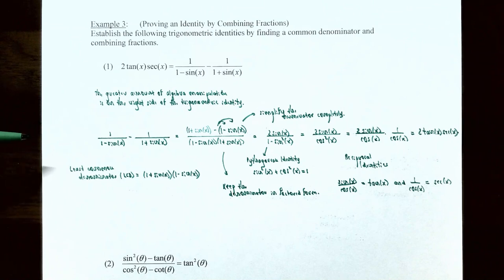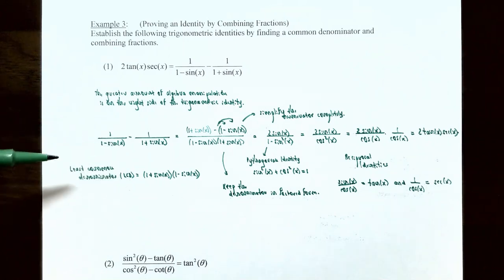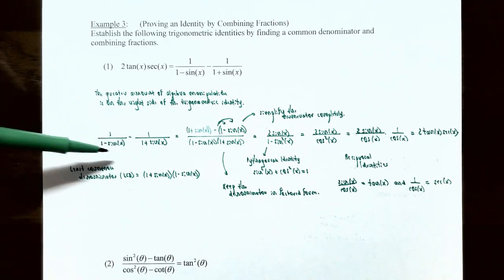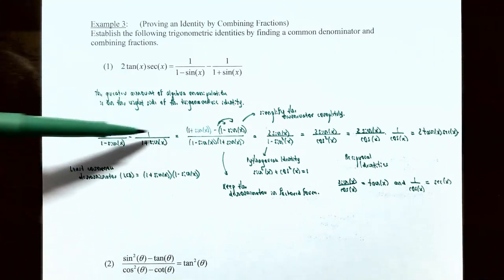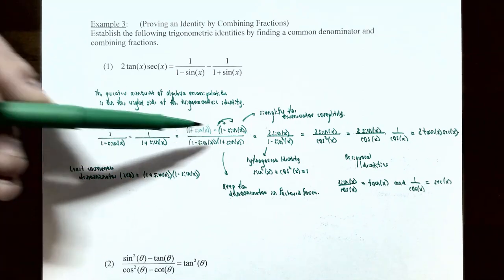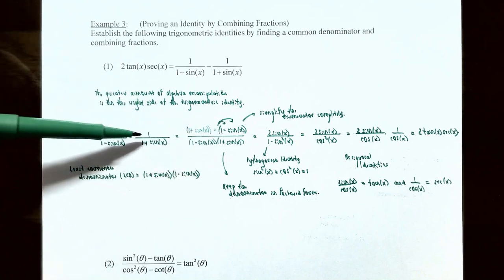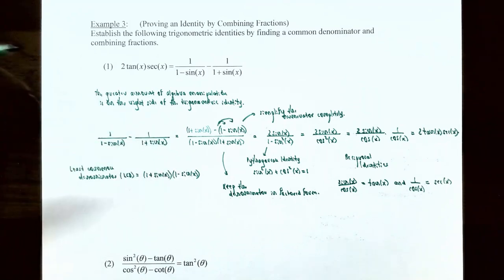Let's start with the right side of the identity: 1/(1 − sin x) minus 1/(1 + sin x). Notice that the LCD is the product of (1 − sin x) and (1 + sin x). The first fraction is missing (1 + sin x) from its denominator, so multiply the numerator by (1 + sin x). The second fraction is missing (1 − sin x), so multiply its numerator by (1 − sin x). The common denominator is (1 − sin x)(1 + sin x).